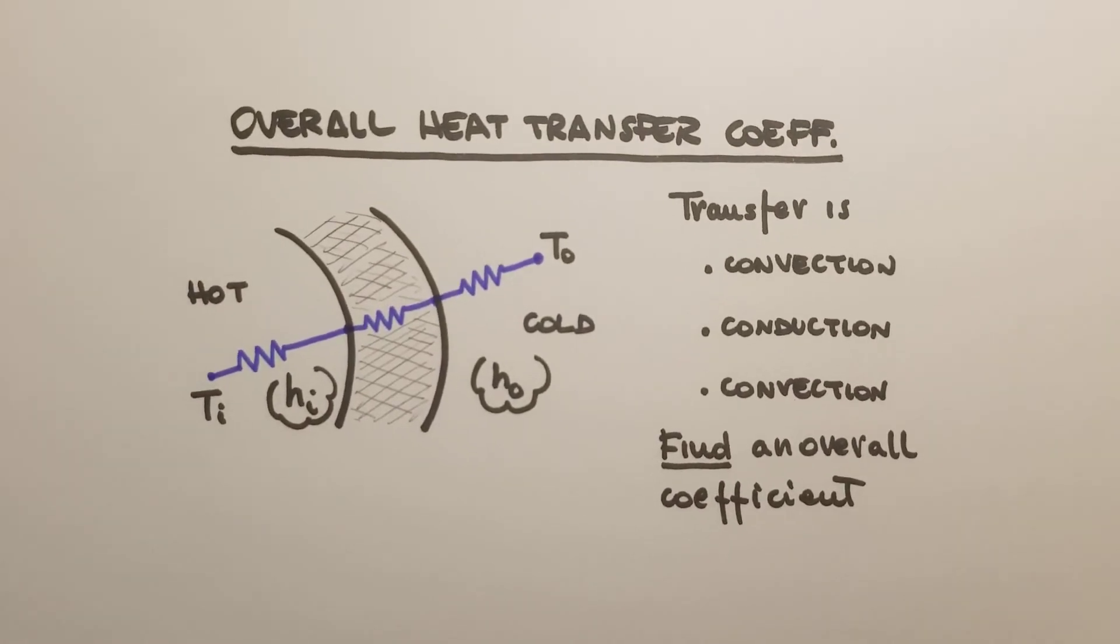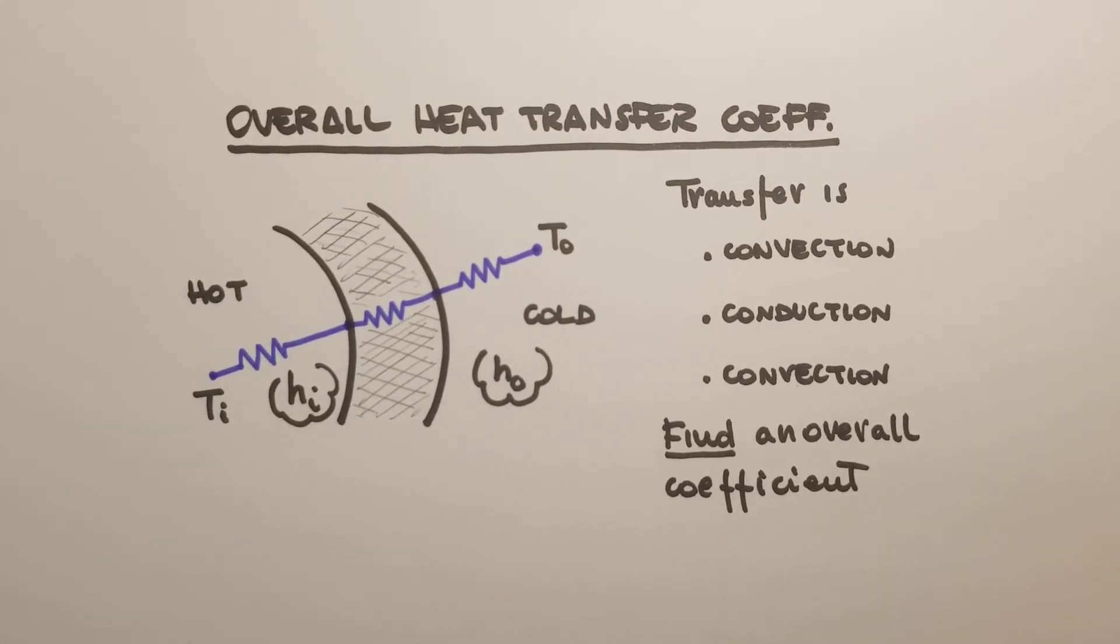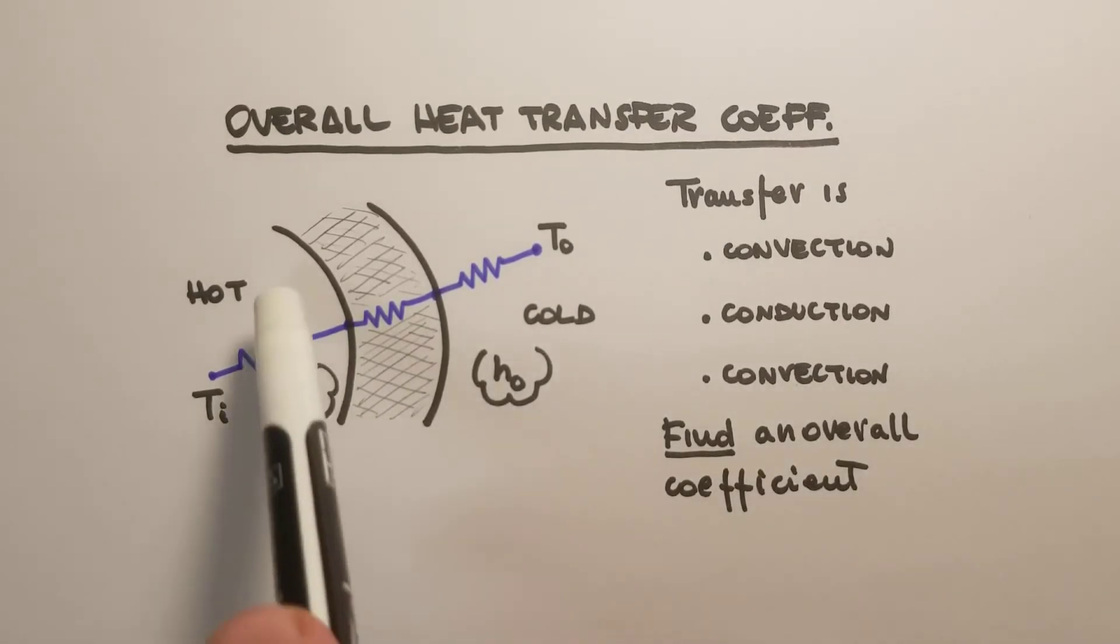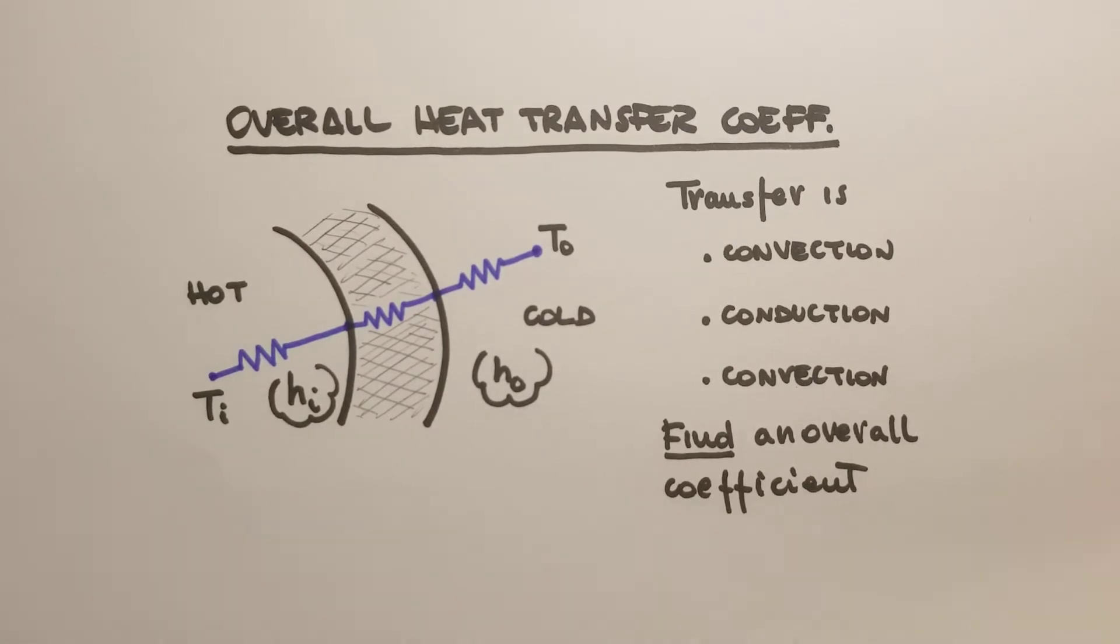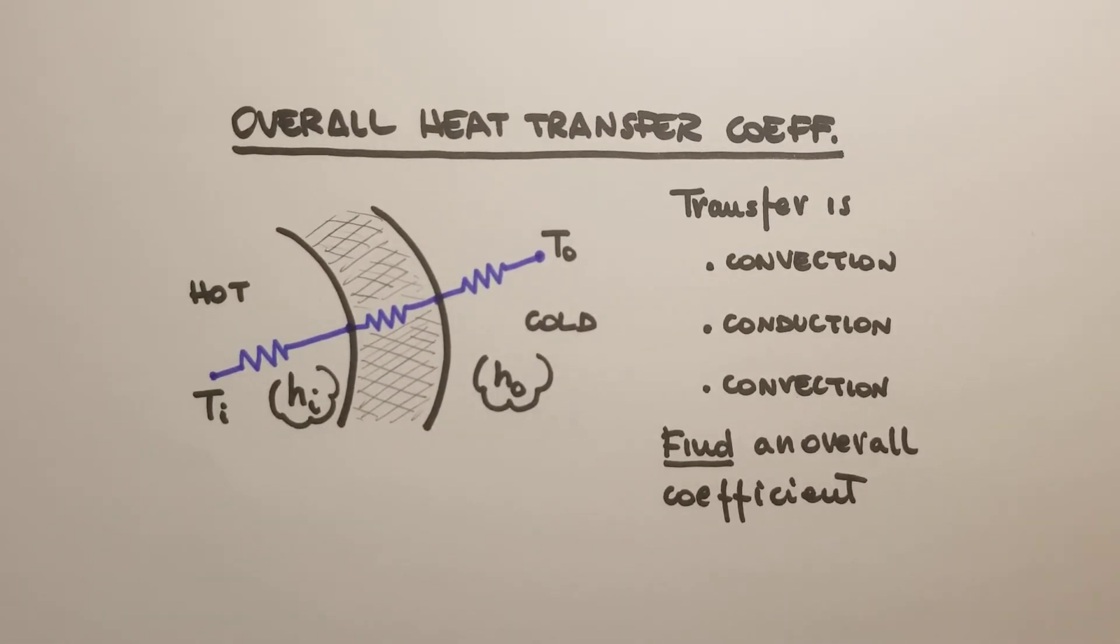It's important in heat exchangers to define an overall heat transfer coefficient. If we take a section of the pipe, inside the circular pipe we have, for example, a hot fluid flowing at temperature Ti, and the flow is characterized by a heat convection coefficient Hi. Then we have a solid part that separates the two fluids, and we have the other fluid, a cold fluid, flowing outside at temperature T0 with a heat convection coefficient H0.